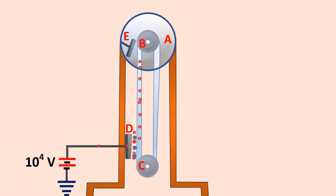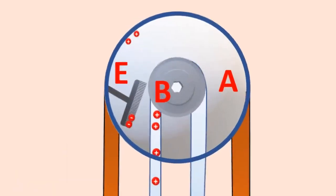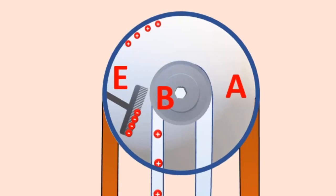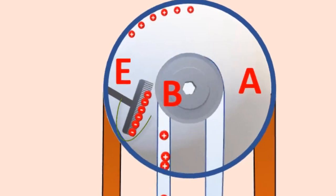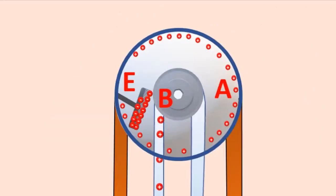When the positive charges reach the comb E, because of the electrostatic induction, comb E acquires negative charge and sphere acquires positive charge. The acquired positive charges are distributed on the outer surface of the hollow sphere.